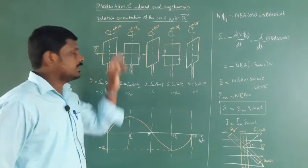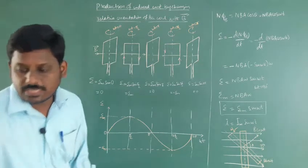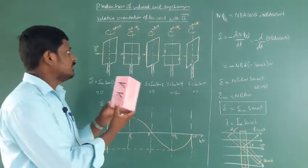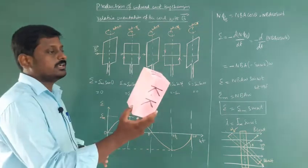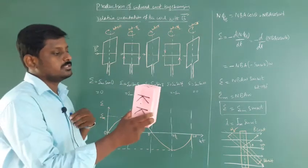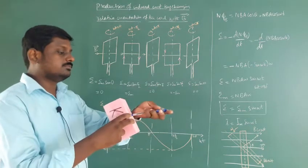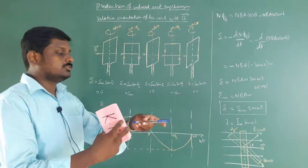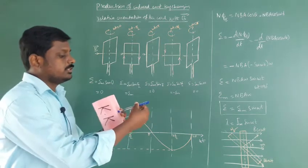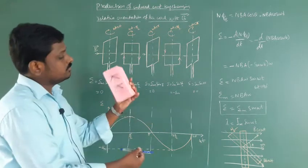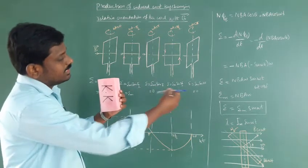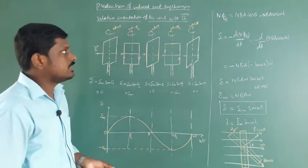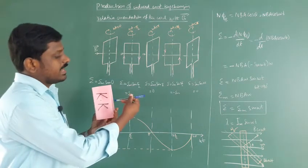Consider a rectangular coil of N turns placed in a uniform magnetic field. Initially the rectangular coil is perpendicular to the magnetic field — the magnetic field goes inwards on one side. The plane and the magnetic field are perpendicular to each other, so the normal vector n-cap is in the same direction as the magnetic field. Therefore the flux is maximum initially, since magnetic flux φ = BA cos θ, and here θ, the angle between the magnetic field and n-cap, is 0 degrees.